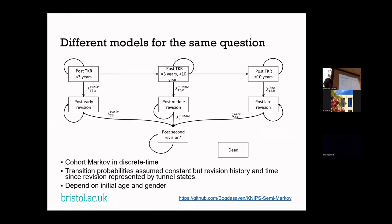This is a cohort Markov model representing the problem, where patients are different numbers of years after their initial total knee replacement. If they have a revision in the early period they go into an early post-revision state; three to ten years goes to post-middle; beyond ten years goes to a late revision. There's also a second revision state and a death state.